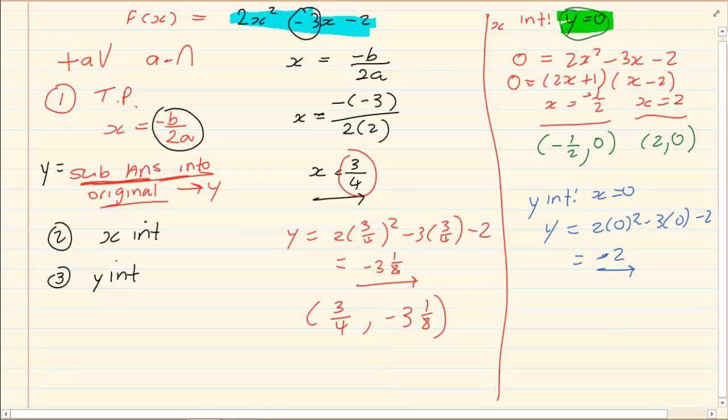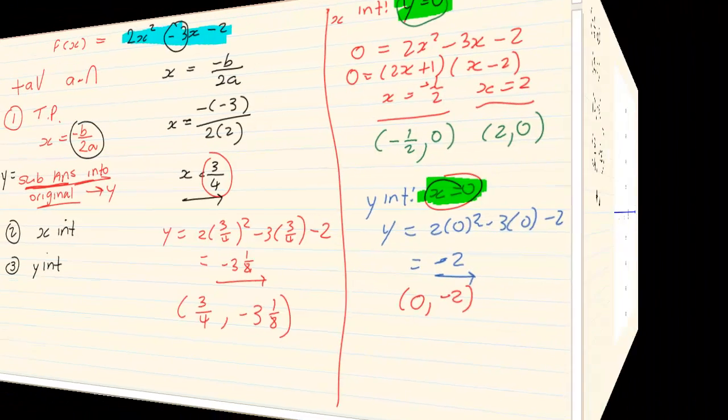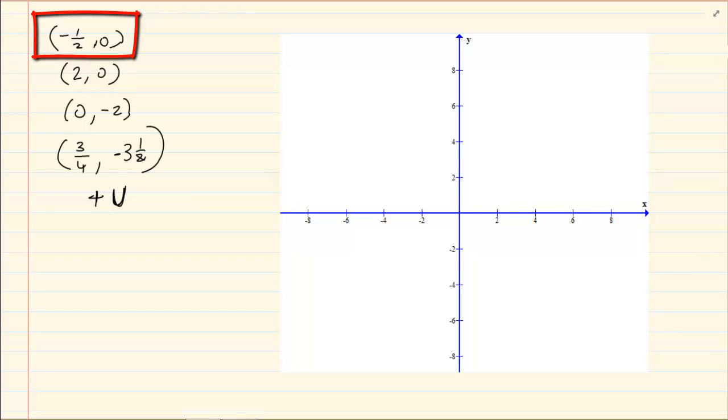What is our coordinate? X is 0, y is minus 2. We are saying in the beginning y intercept x is 0 and then y equals minus 2. What are our coordinates? Our coordinates are minus a half and 0, 2 and 0, 0 and minus 2, and our turning point was 3 quarter and minus 3 and 1 over 8. We also know from the question that it is a positive which means that I am a happy graph.